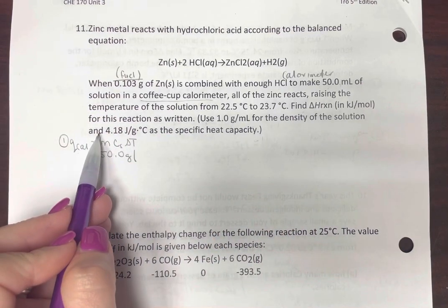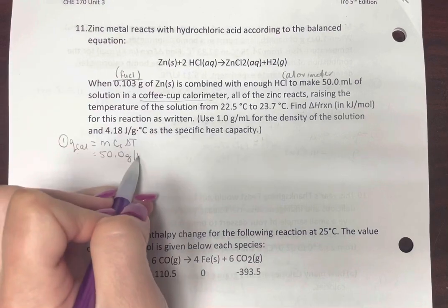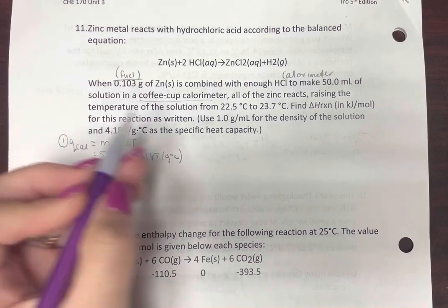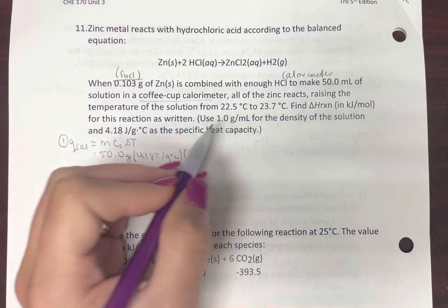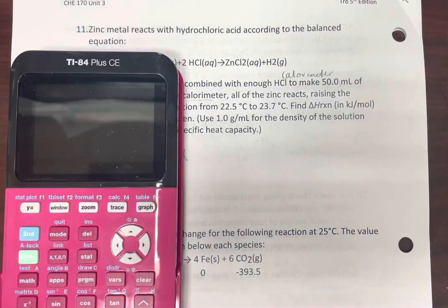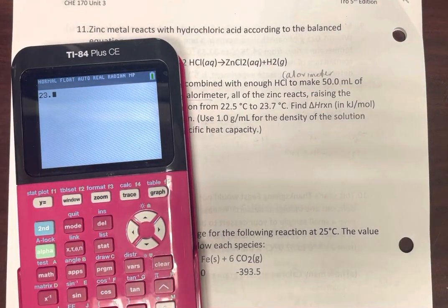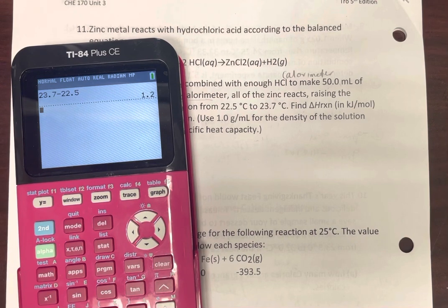Specific heat here, 4.18 joules per gram degree Celsius. You're going to be doing something similar to this in the lab. Delta T, 23.7 minus 22.5, 1.2.